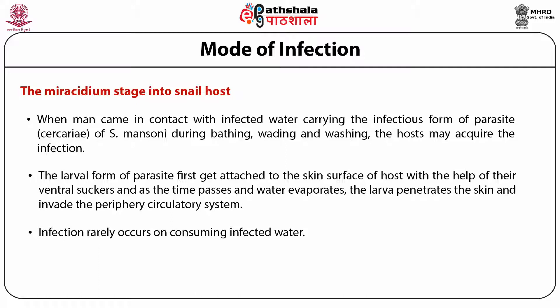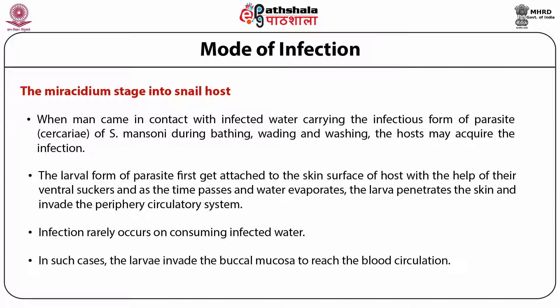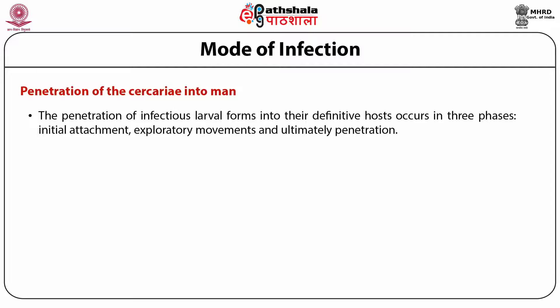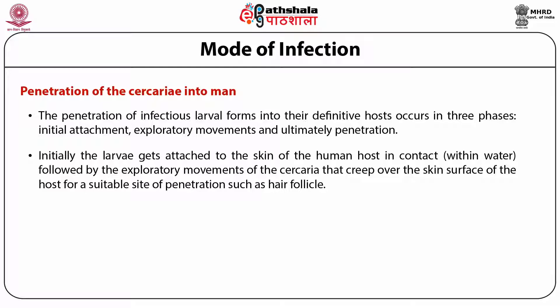Infection rarely occurs on consuming infected water; in such cases, the larvae invade the buccal mucosa to reach the blood circulation. Penetration of the cercaria into man occurs in three phases: initial attachment, exploratory movements, and ultimately penetration. Initially, the larvae get attached to the skin of the human host in contact with water, followed by exploratory movements of the cercaria that creep over the skin surface for a suitable site of penetration such as a hair follicle, further followed by final penetration of cercaria into the skin epidermal layer using proteolytic enzymes produced by the pre-acetabular as well as post-acetabular gland secretions.